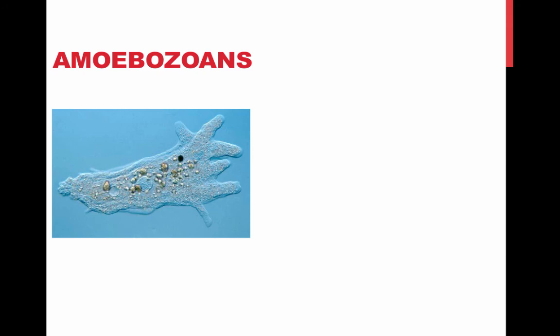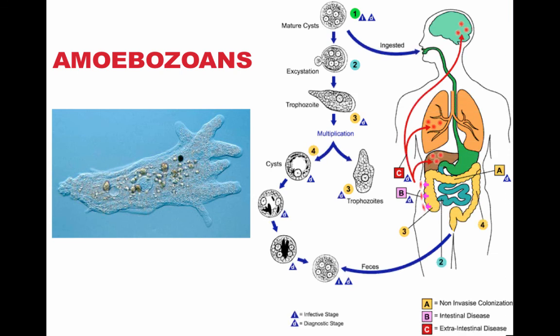Amoebozoans are amoebas that have lobe- or tube-shaped rather than thread-like pseudopodia. They include gymnamoebas, entamoebas, and slime molds. Entamoebas are parasites of vertebrates, and Entamoeba histolytica causes amoebic dysentery in humans — also known as Montezuma's revenge — which is the reason why you don't drink the water when you go to Mexico.